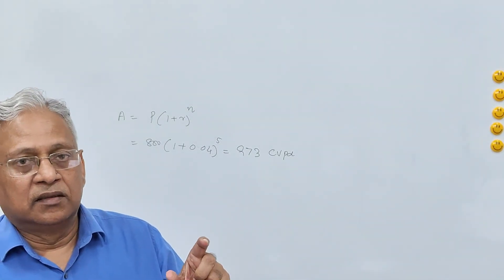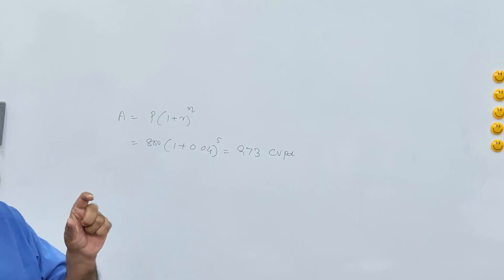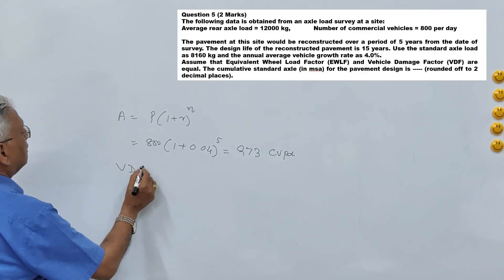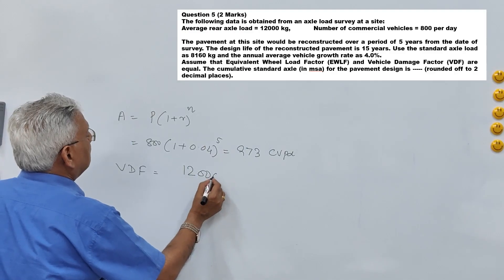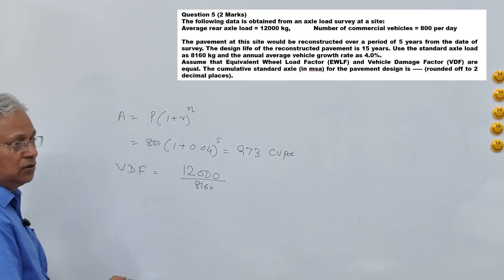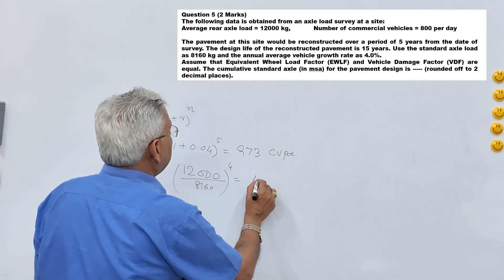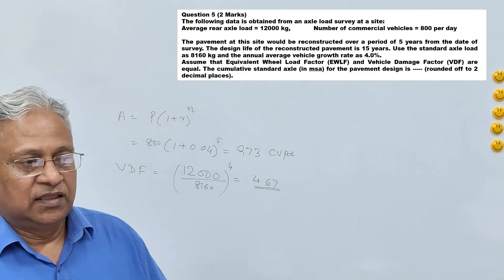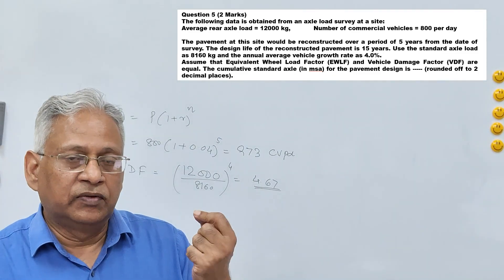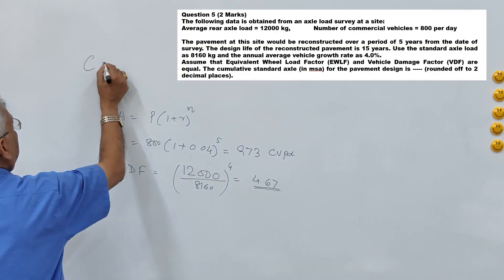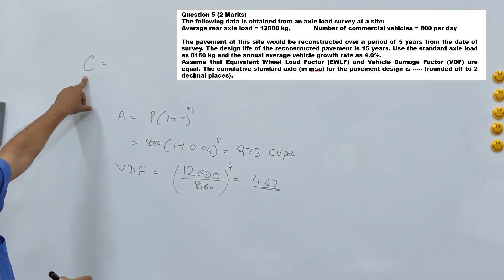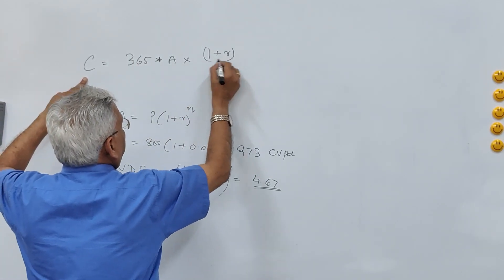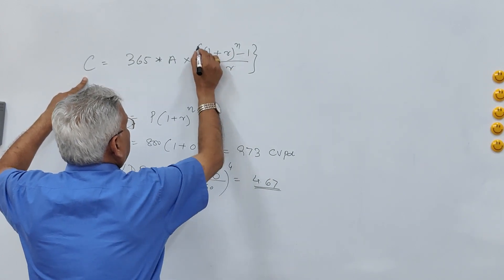The average rear axle load is 12,000 kg, so we calculate the Vehicle Damage Factor (VDF) using the 4th power law: VDF = (12,000 / 8,160)^4 = 4.67. Once VDF and growth rate are known, we can find the design traffic over 15 years using the cumulative standard axles formula: Total MSA = 365 × A × [(1 + R)^N − 1] / R × VDF.